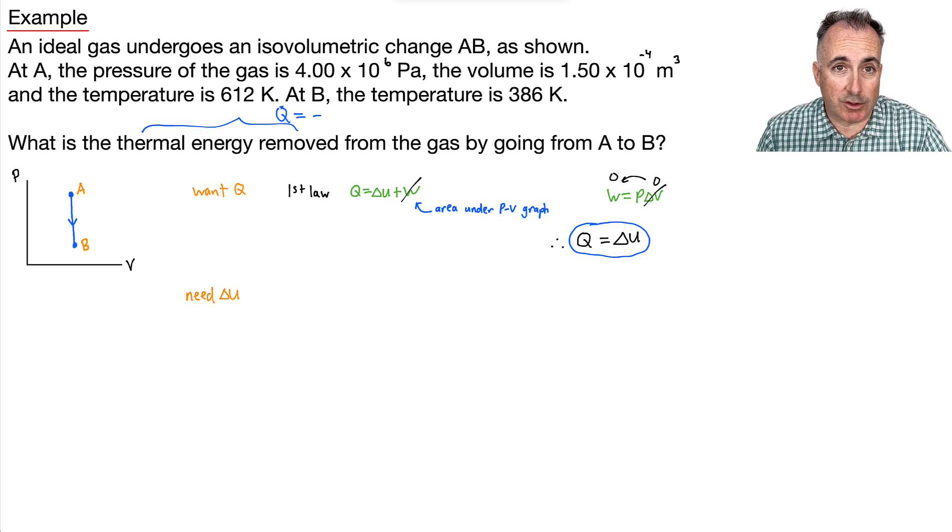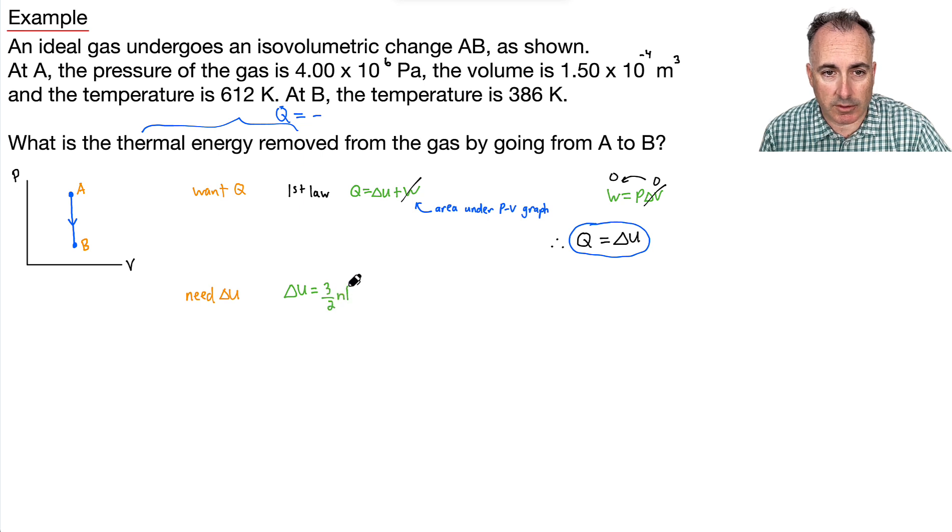It might help to just use our equation that we've just been learning about. So delta U equals 3 halves N times R times delta T. Now, that means that we need to figure out the change in internal energy in going from A to B here. It's going to be related to the change in temperature. And we do know the change in temperature. We know the temperature at A is 612, and we know the temperature at B is 386, so we're okay there. But we do need to know NR together, and that's the thing that we don't know. We don't know this. We need this.